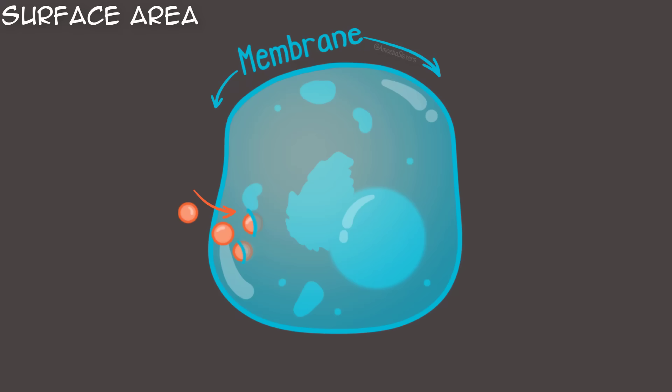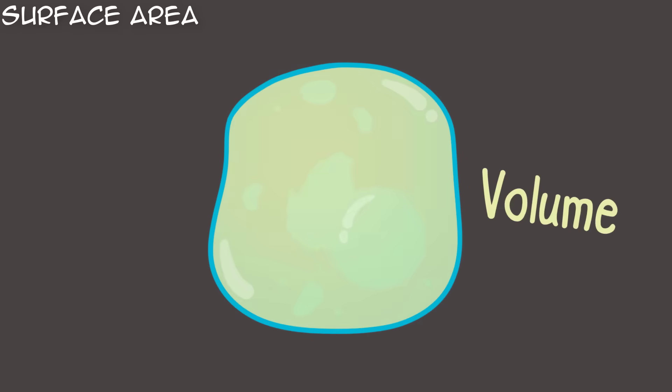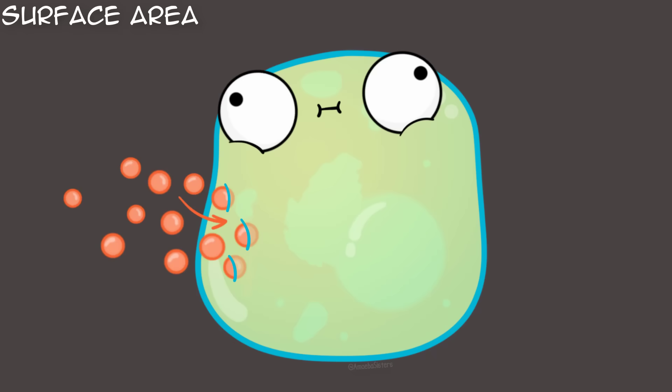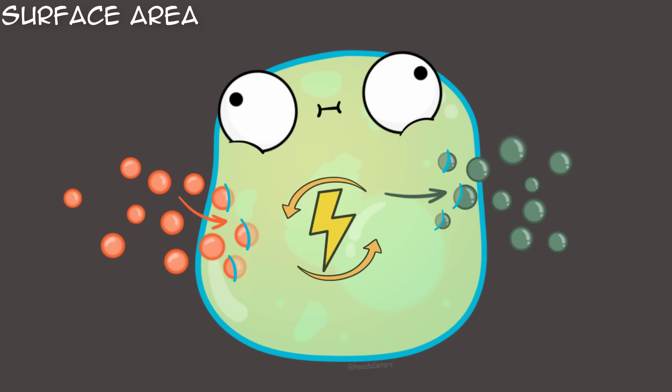That includes food coming in, as well as molecules that are essential for metabolic processes, and also waste going out. If volume — which is all the space inside — increases, then you will have more need for surface area, as you will have more need for food to enter, more need for waste to be removed, and more metabolic reactions occurring in this larger volume in the first place.